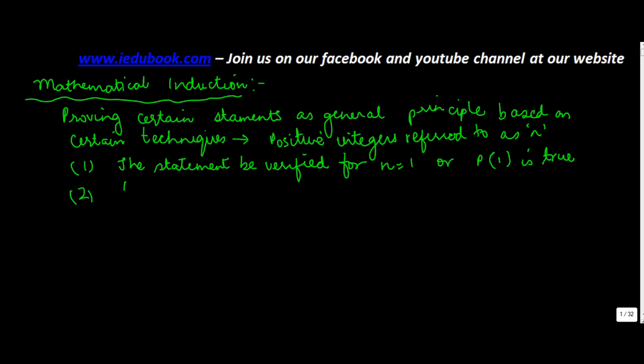The second step is that we assume that the statement is also true for some value n is equal to k, k being a positive integer.